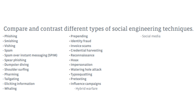Then we have whaling, a social engineering technique that focuses on big targets like a company's CEO, COO, or CFO. They are called whales because they are important and have access to a lot of information. While attacks need to be fine-tuned to maximize success, whales tend to make mistakes just like everyone else.